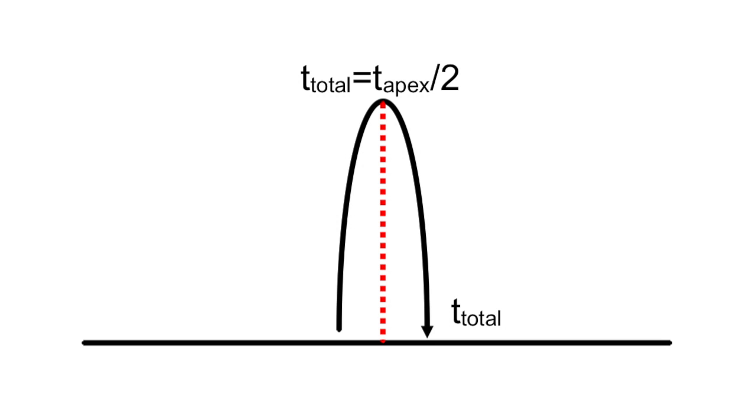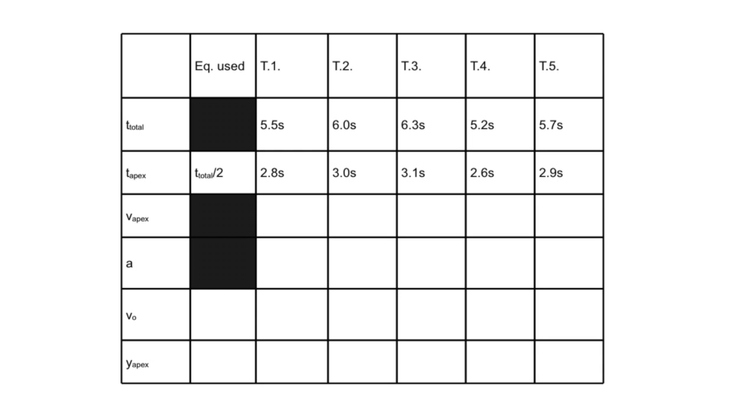Equation 1: The apex is the peak of the rocket's flight. Calculate the time it takes the rocket to reach its apex, which is equal to one half the total flight time. Enter this information in the data table. An example of the data table can be seen here.